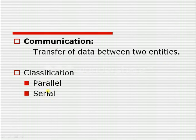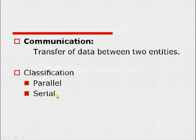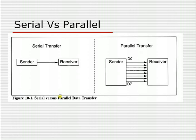Communication is classified into two types: parallel and serial. In case of parallel, multiple bits are transferred at the same time through multiple channels. When it comes to serial, a single bit is transferred at a time through a single channel — that is why it is called serial communication.